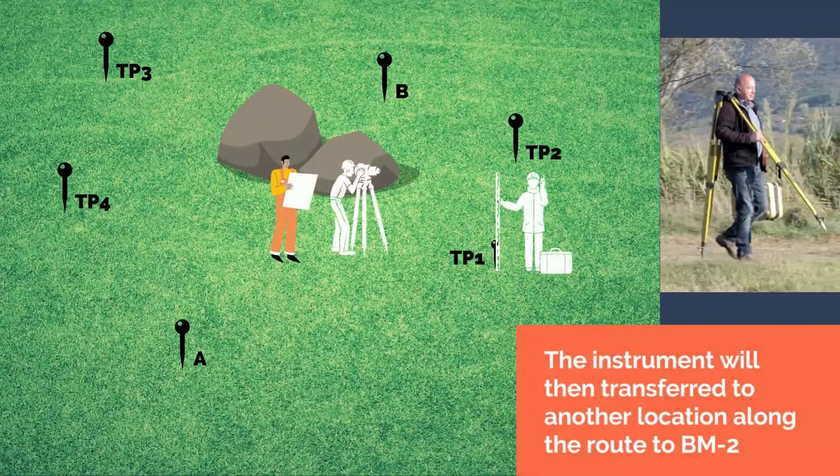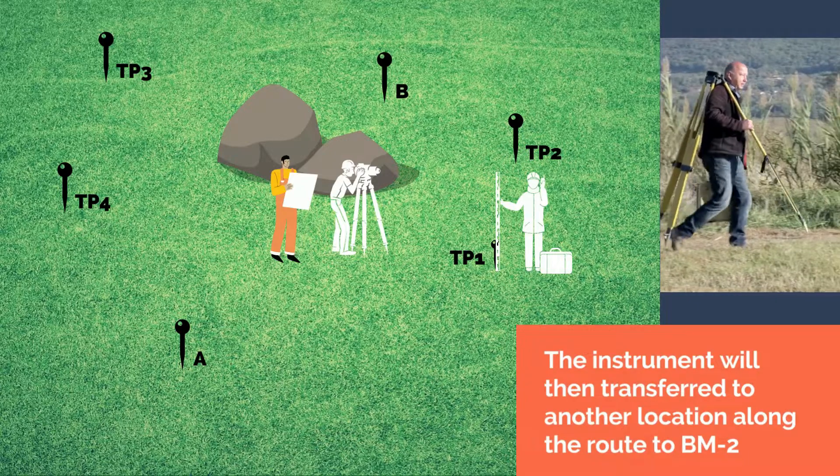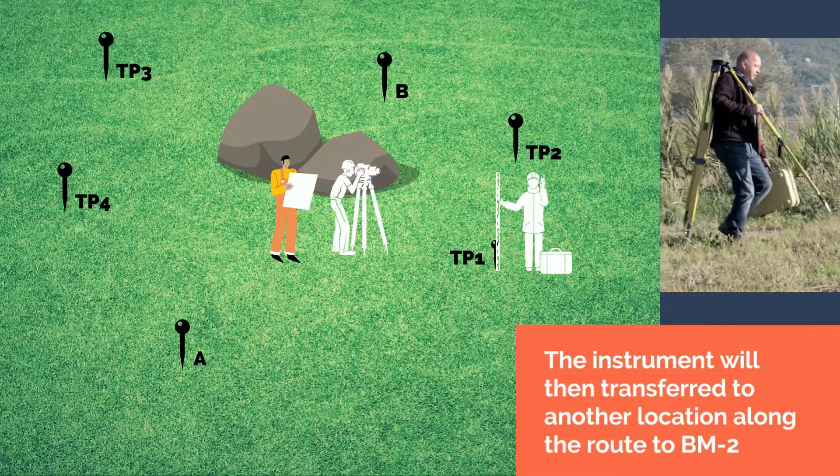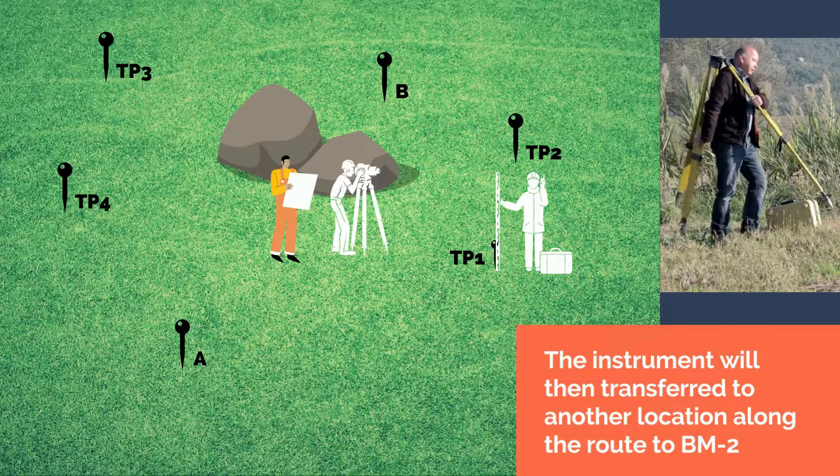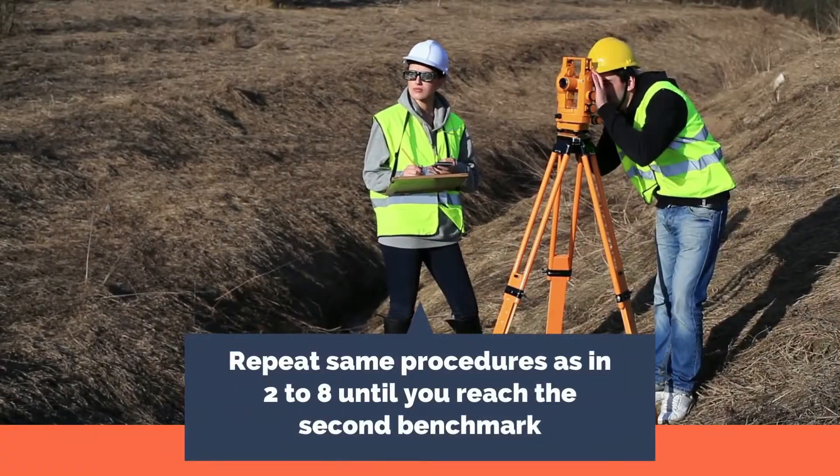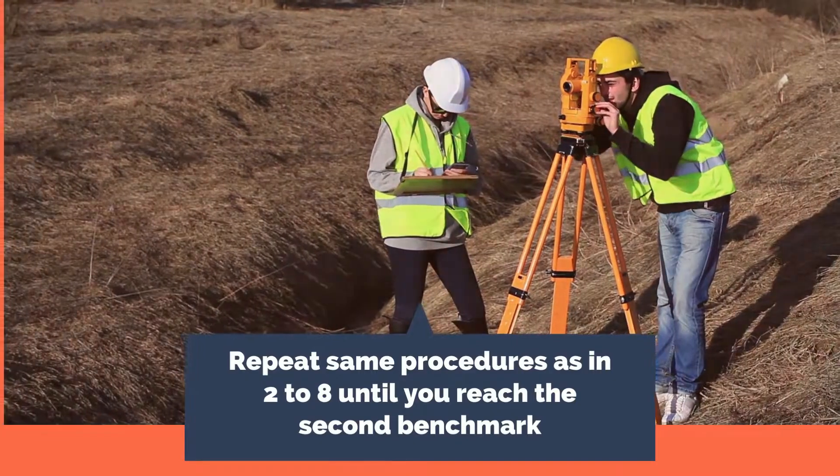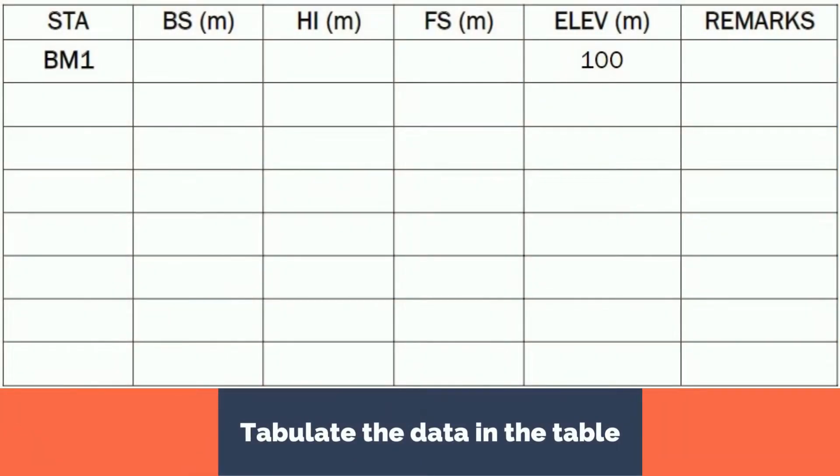The instrument will then be transferred to another location along the route to BM2 where the first turning point is still visible in the telescope. Repeat the same procedures until you reach a second benchmark and tabulate the data in the table.